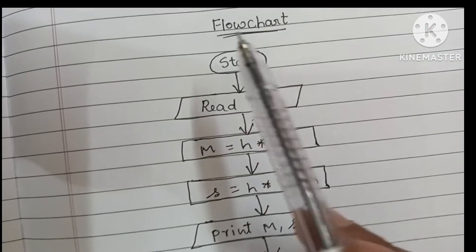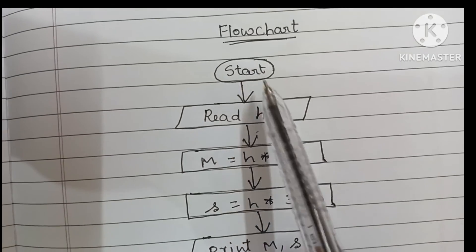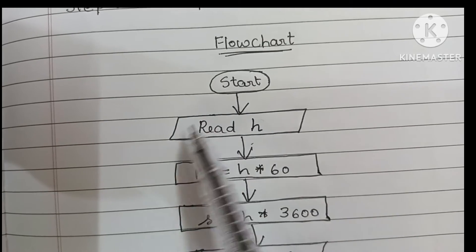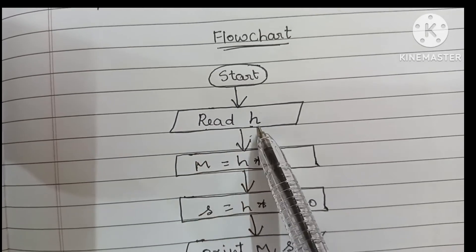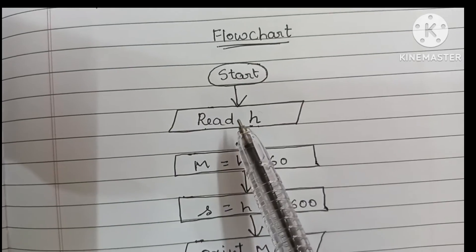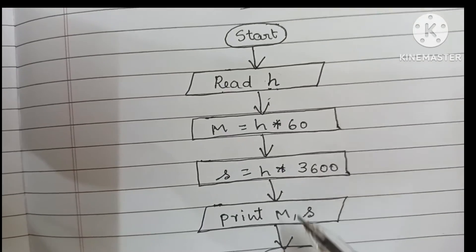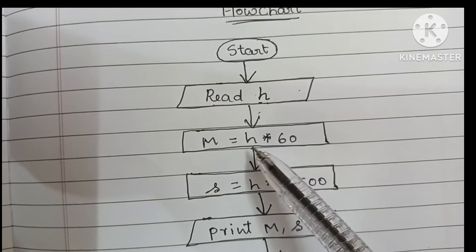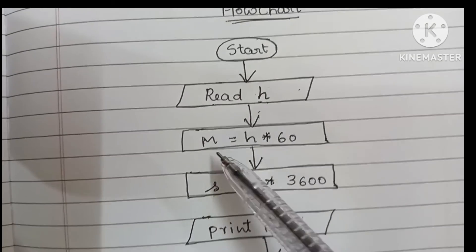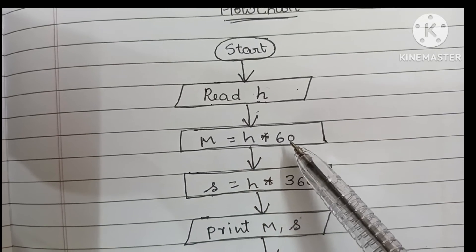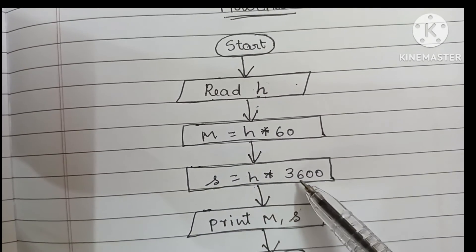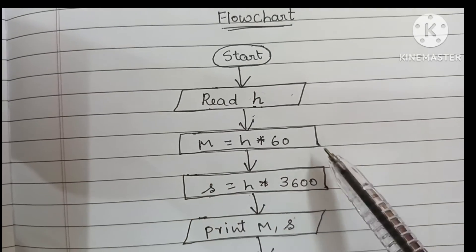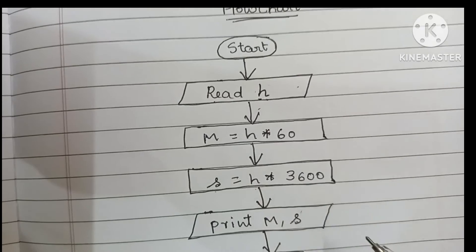The flowchart starts with the start statement, written within an oval shape. Next we read the input value h using read h. Input and output values are always written within a parallelogram shape. Next we calculate minutes and seconds: m is equal to h into 60, and s is equal to h into 3600. Process calculations or operations are always written within a rectangular shape.